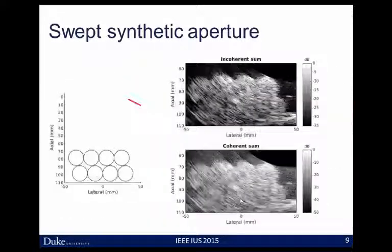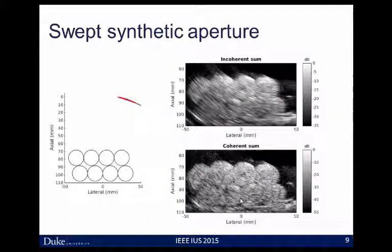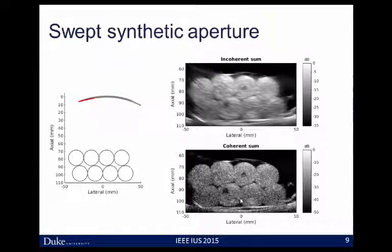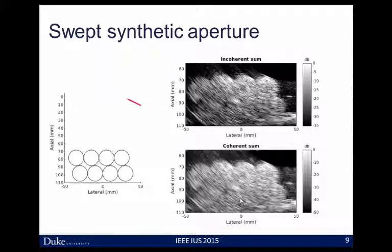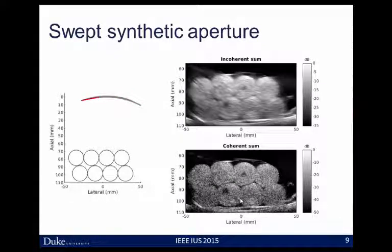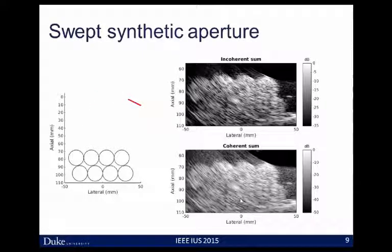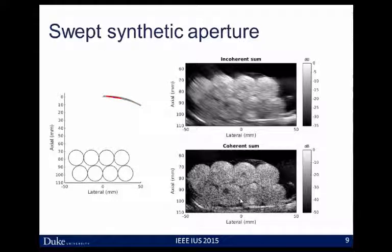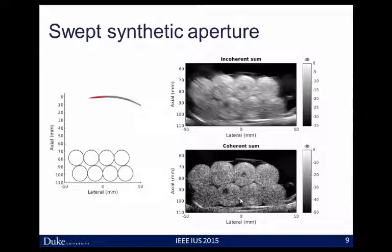To combine that data, we have two options. We can do it incoherently — the typical speckle compounding approach — where we see nice smoothing of that speckle texture as we add more frames with phase-insensitive data. But because we've precisely aligned our data to sub-wavelength precision, we can coherently sum it and build up a synthetic aperture giving us the full range of that 10-centimeter effective array. We can watch as that speckle pattern gets tighter, edge resolution gets better, and we'll quantify this further.